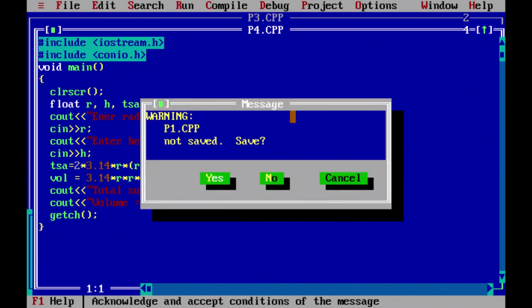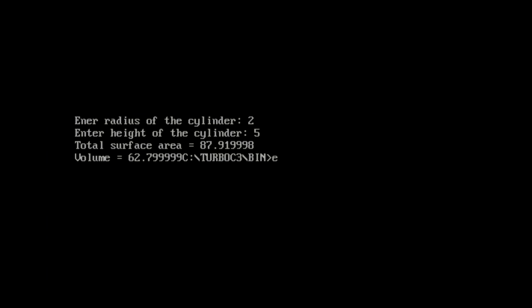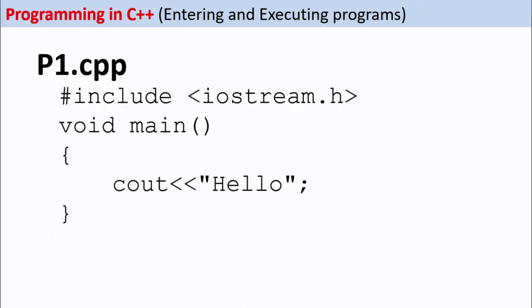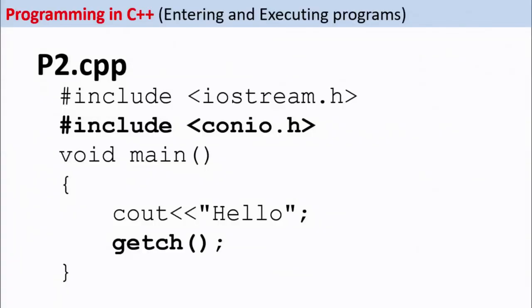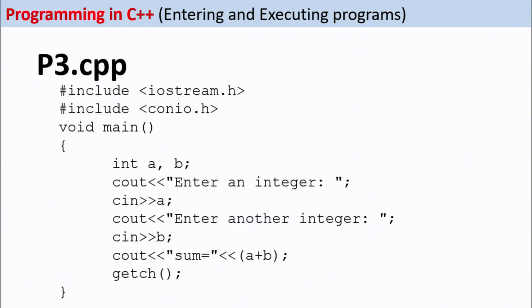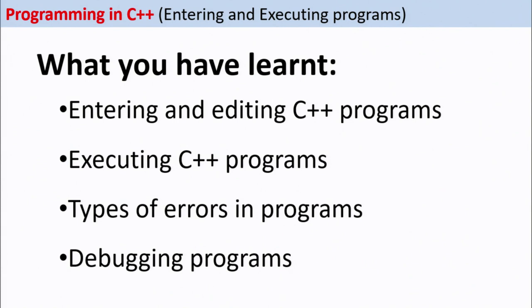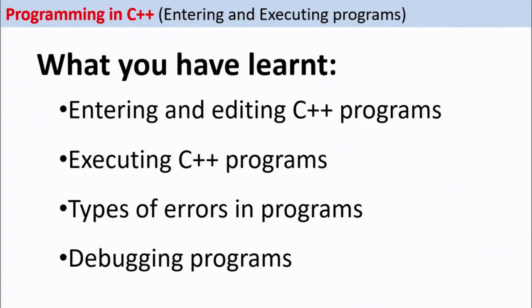So this is how practically we run programs using Turbo C++. In today's class we have seen how to include conio.h and use getch, how to find the sum of 2 numbers. What we have learned is: how to enter C++ programs, how to execute them, what are the different types of errors — runtime errors, syntax errors, and logical errors. Errors in a program are known as bugs, and the process of removing those errors is known as debugging. Thank you students — I hope this class was really useful for you.